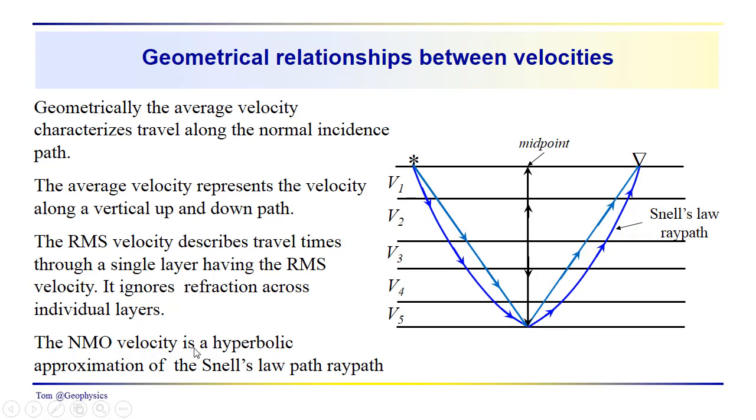But the NMO velocity is a hyperbolic approximation of the Snell's law path. So it is not equal to the RMS velocity, but it attempts. The value that you come up with is a hyperbolic approximation to this Snell's law bending ray path as it goes through each layer. So those velocities are different, and just wanted to talk a little bit about that so that you have some kind of a conceptual idea of the differences between the average, the RMS, and the NMO velocity and what they might mean geometrically as well as mathematically.